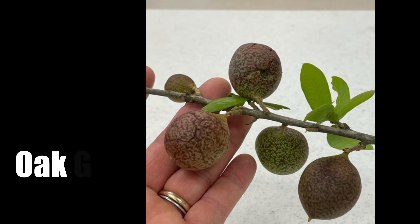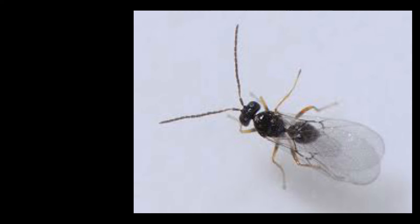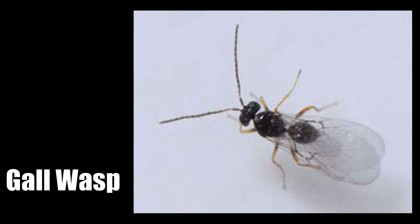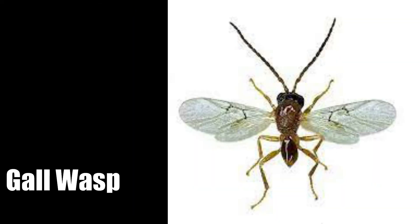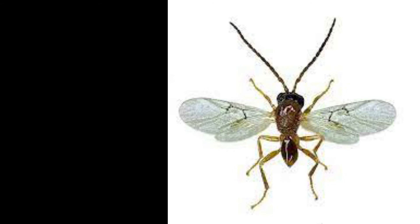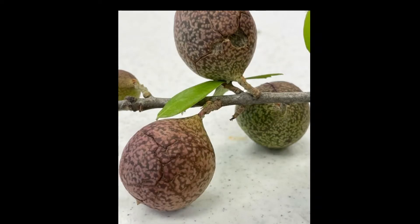These are irregular plant growths that are caused by a little insect called a gall wasp. The wasp lays an egg on developing or new plant tissue and that tissue begins to react or change. This change is caused by a powerful growth regulating chemical that is produced by the wasp. The tree begins to grow around the egg or immature insect.